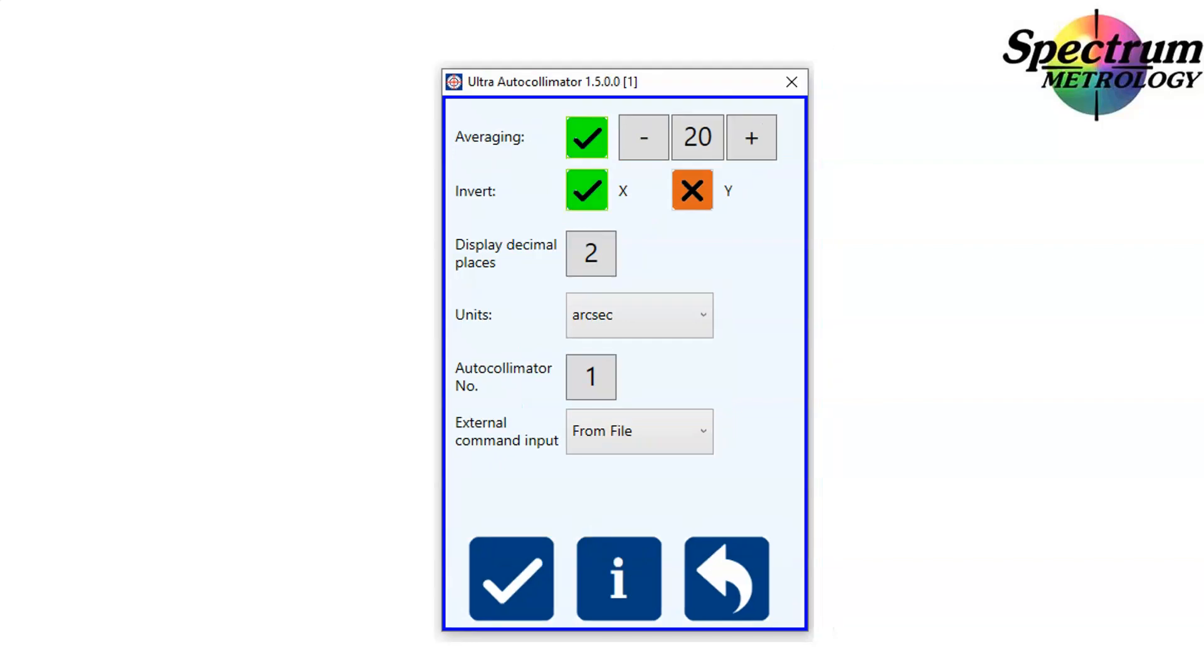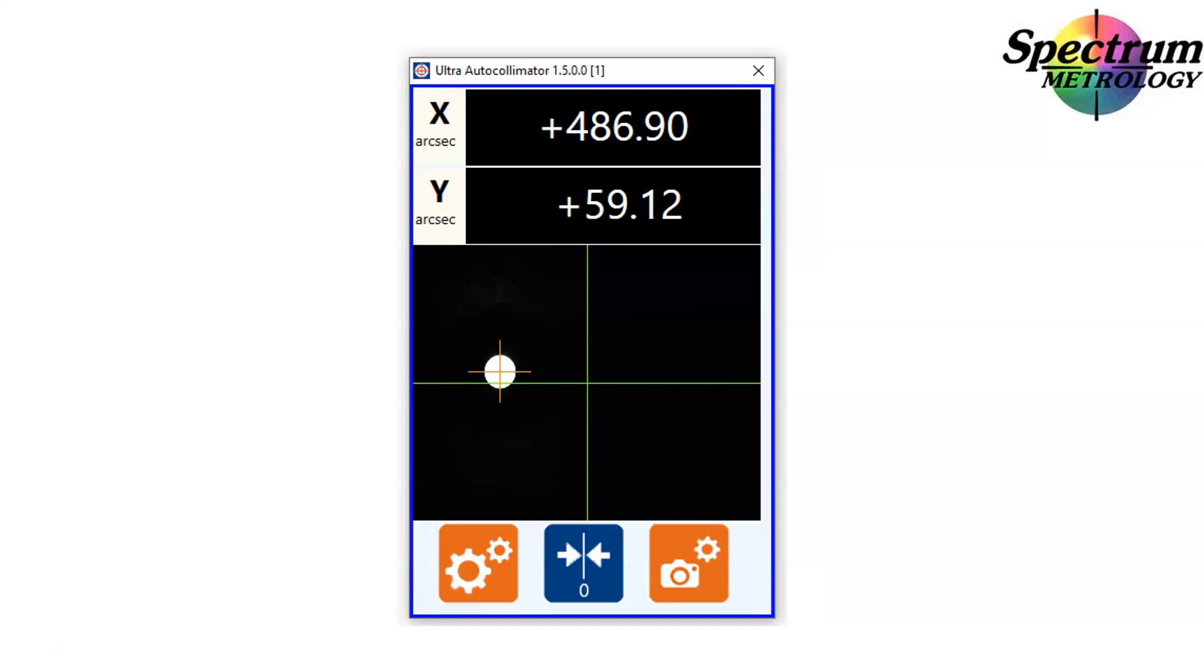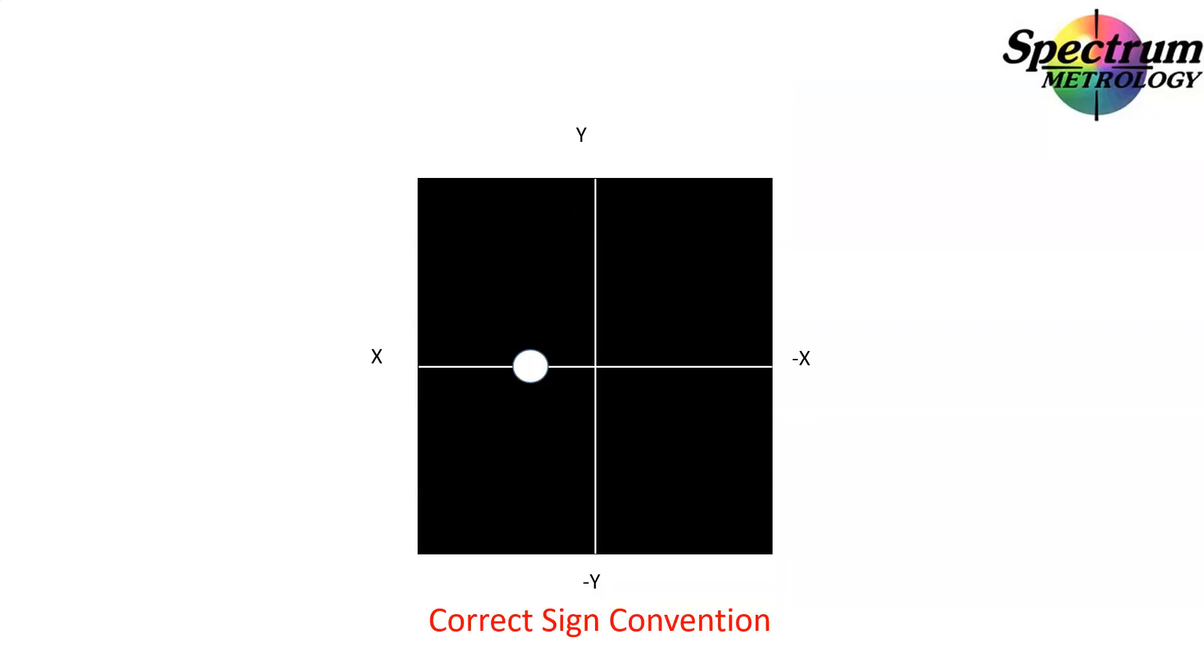By inverting the X and then accepting that and returning, you'll see the X axis, although on the left-hand side, is now shown as a positive value. That now means we have the correct sign convention.